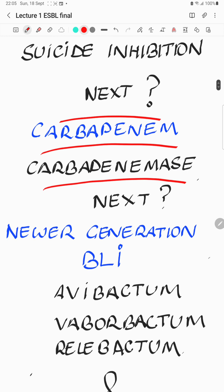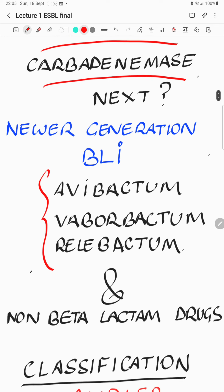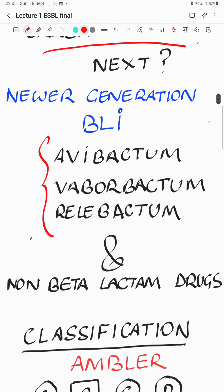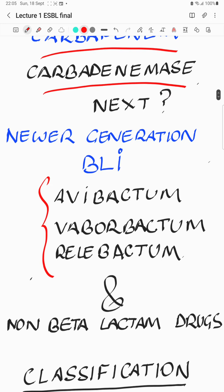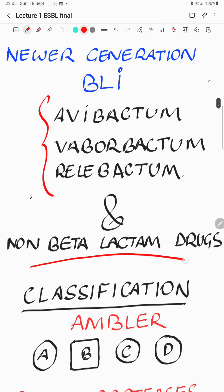To circumvent carbapenemases, we have the newer generation beta-lactamase inhibitors: avibactam, vaborbactam, and relebactam. They are not structurally like a beta-lactam — they are structurally different, so they are not look-alikes. They have reversible binding with beta-lactamase, so they can be made available again for action as long as the antibiotic duration exists. They have also extended the spectrum. Avibactam comes with ceftazidime, vaborbactam with meropenem, and relebactam with imipenem-cilastatin. We are also using non-beta-lactam drugs to overcome the ESBL phenomena.